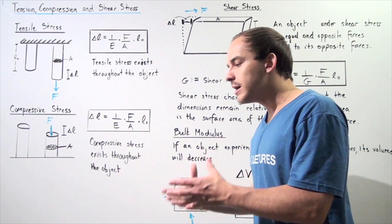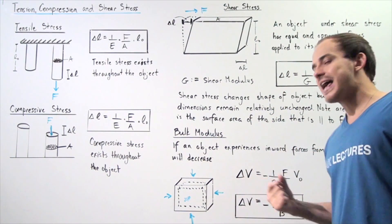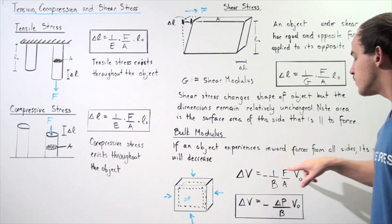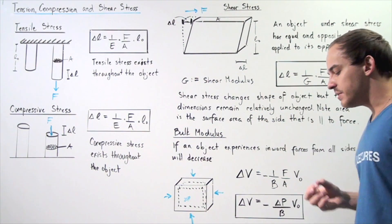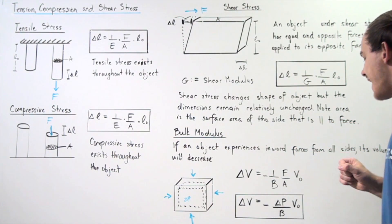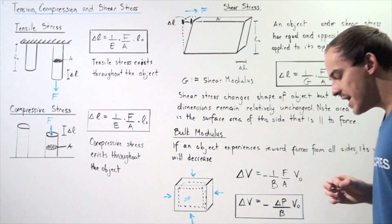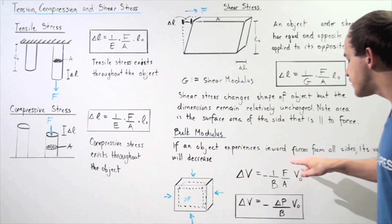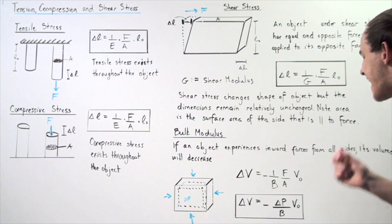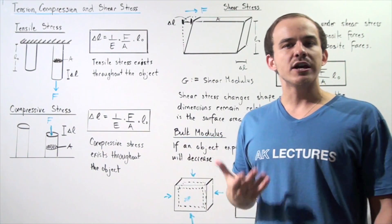To find by how much our volume changes, we use an equation similar to the previous ones, except now instead of change in L we have change in volume, and instead of a positive sign we have a negative sign in front of 1 over B, where B is our bulk modulus. The negative simply implies that the volume decreases. We multiply by force divided by area — also known as pressure — times the initial volume of the object. So the change in volume equals negative of the change in pressure times initial volume, divided by the bulk modulus B.